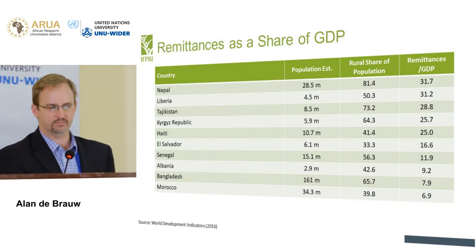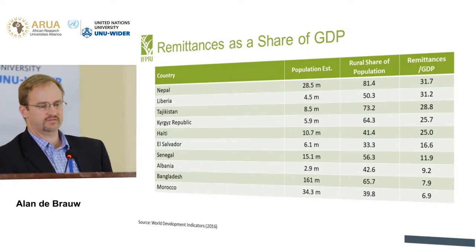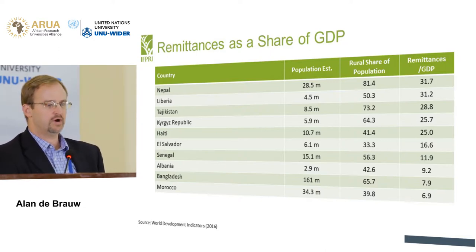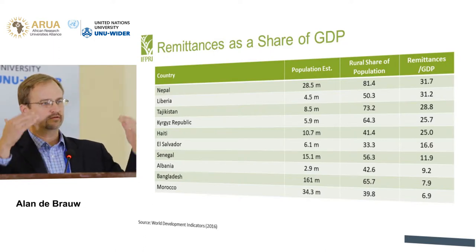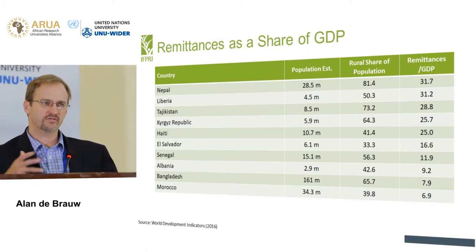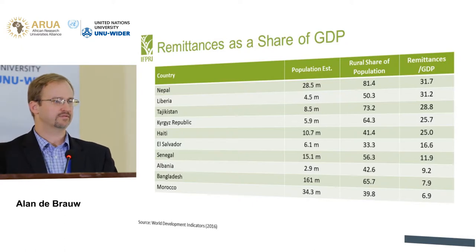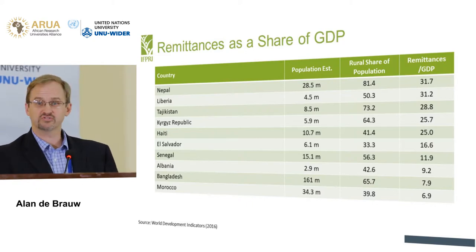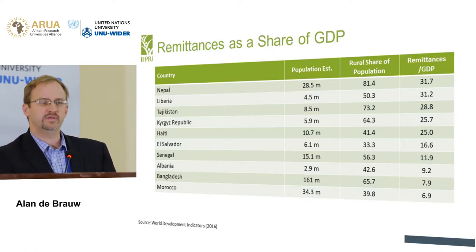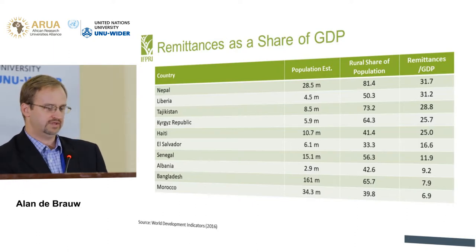Looking at remittances as a share of GDP: it's actually 30 percent in Nepal, 30 percent in Liberia, and 29 percent in Tajikistan. There are quite a lot of small countries with very high shares. I left out the Pacific Islands because those have extremely high shares. Even a country like Bangladesh, with a population of 160 million, has almost 8 percent of its GDP coming in from remittances. So remittances can be a really substantial share of GDP.